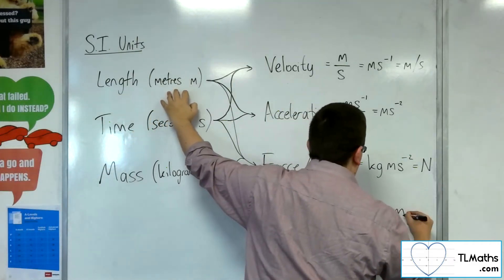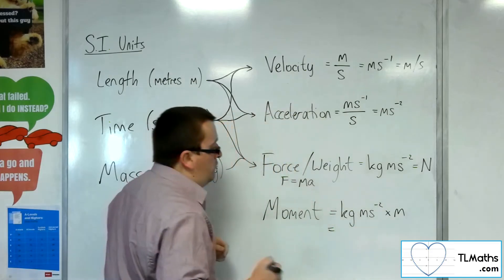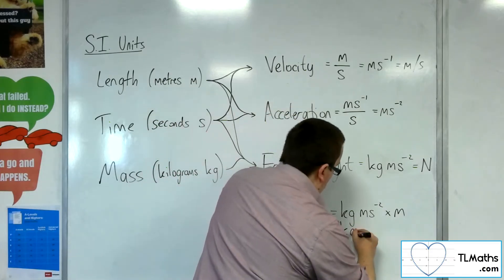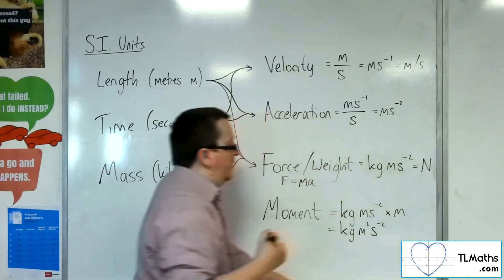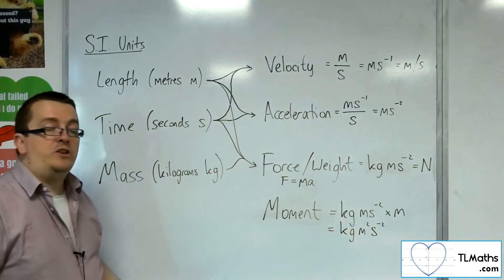This gets multiplied by m, so it's actually written as kilograms meters squared per second per second, using our dimensional analysis.